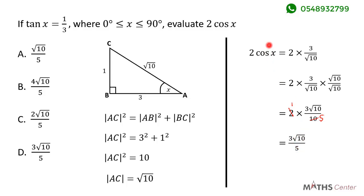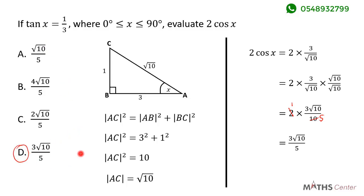So 2 cos x is equal to 3 root 10 divided by 5. When we look through the options, we can see that the correct answer is D.